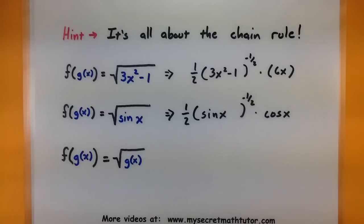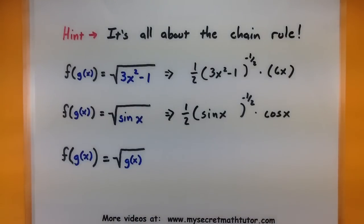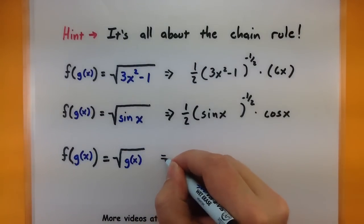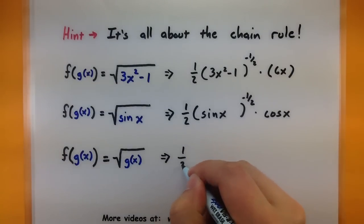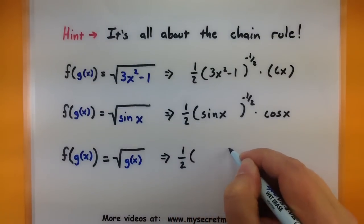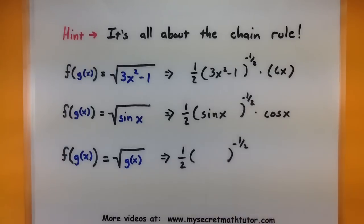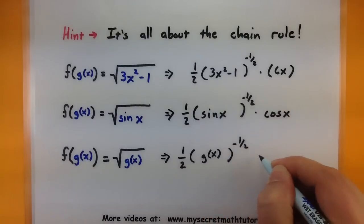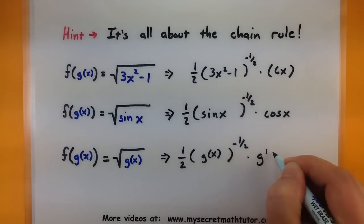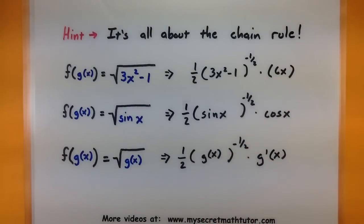Again, I'm going to emphasize that it doesn't matter what that inside function is. In fact, it could be any general function. Let's suppose it was just a g of x. The process is not going to be any different. We'll start off with the derivative of the outside — I've reduced the power — the inside is going to stay exactly the same, and now I will multiply by the derivative of the inside. If you followed all three of those examples, you can do implicit differentiation.